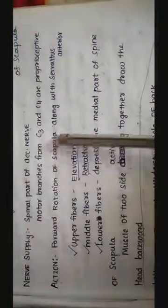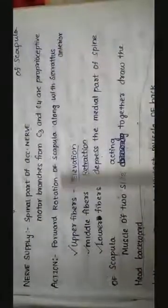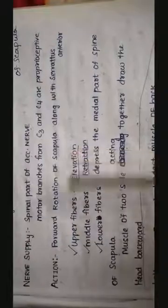The trapezius muscle does the forward rotation of scapula along with the serratus anterior muscle. The upper fiber of the trapezius muscle are concerned with elevation. Whereas, the middle fiber concerned with the retraction. Lower fiber concerned with the depression. It depresses the medial part of spine of scapula. The muscle of two sides acting together draw the head backward.